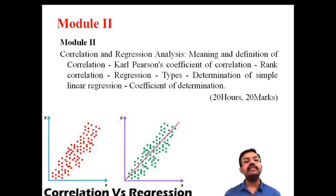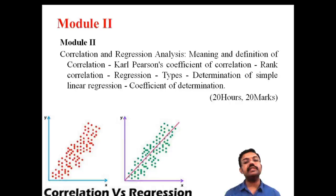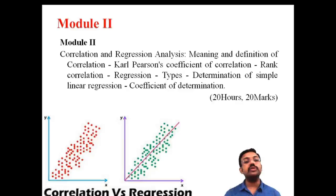The second module has 20 hours of lecture time and we can expect 20 marks from this module. So correlation and regression — including Karl Pearson's method and determination of the coefficient — are the important elements of the second module.